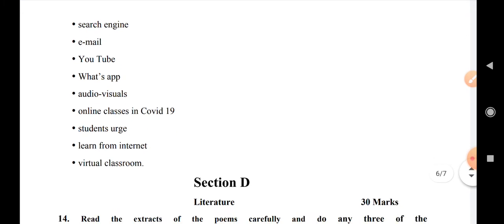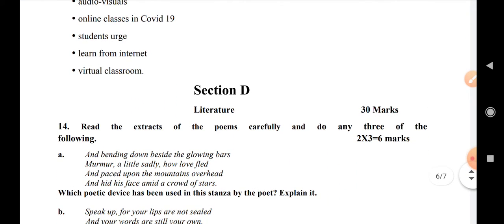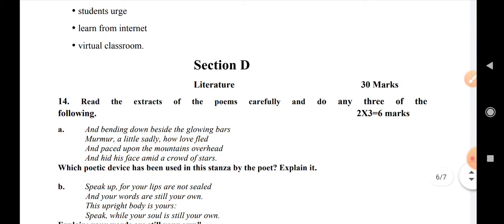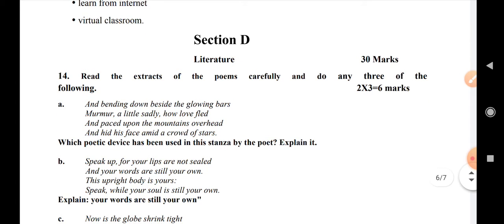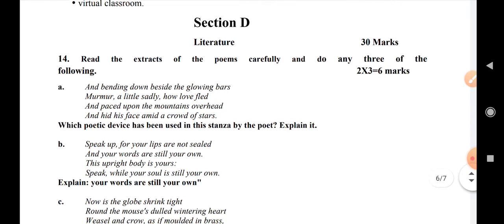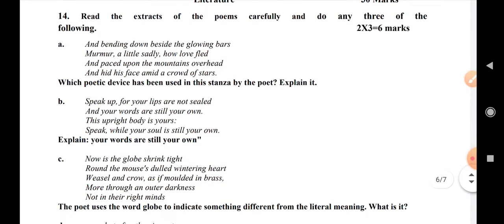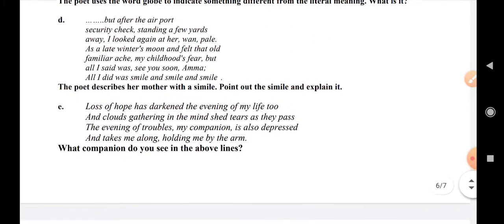Section D is Literature, which carries 30 marks. Question number 14: read the extracts from the poems given. You need to read them carefully and attempt 3 out of the questions given below. This carries 6 marks.